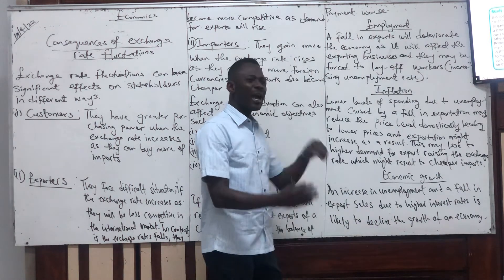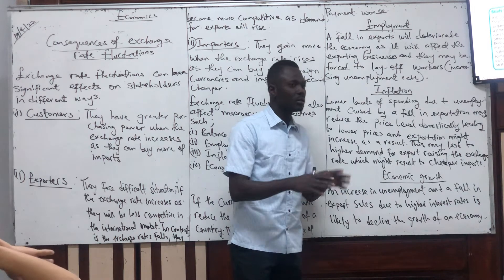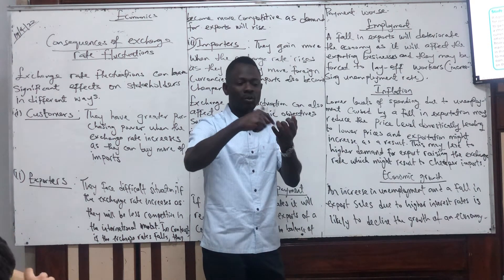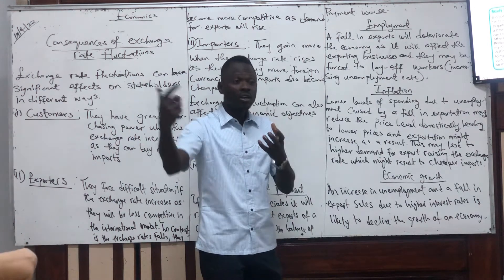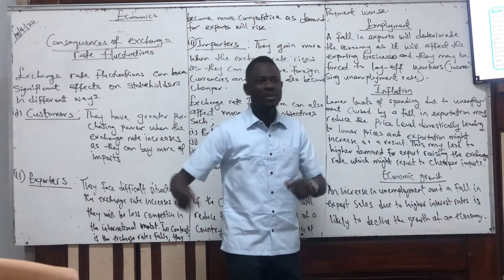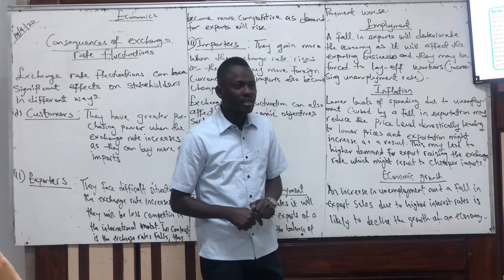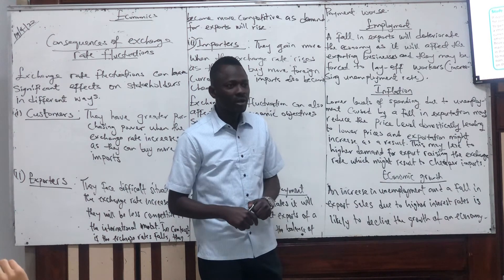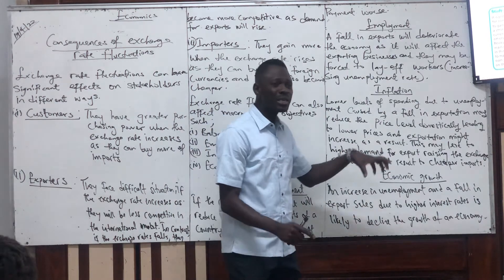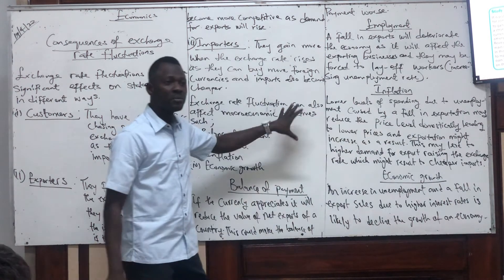Moving to economic growth: an increase in unemployment and a fall in exports will definitely decline the economy. An increase in unemployment means government will spend more on transfer payments such as unemployment benefits. Firms will not be able to invest, output will fall, and then the economy goes down. So these are the consequences of fluctuations in exchange rates with respect to macroeconomic objectives.